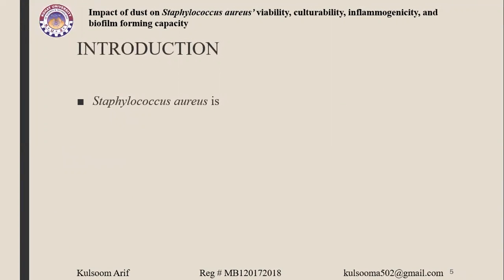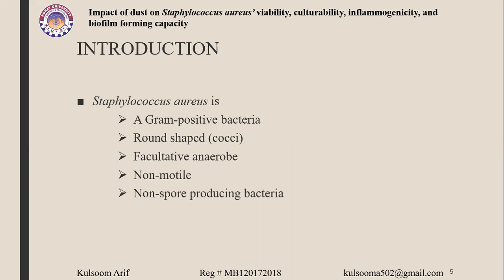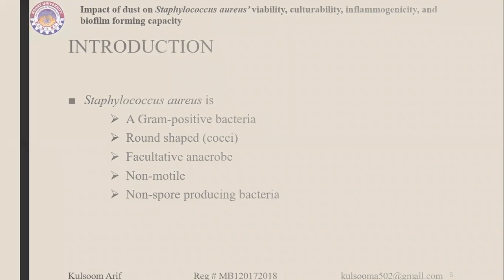Coming towards the introduction. The research paper revolves around Staphylococcus aureus. Staphylococcus aureus is a gram-positive bacteria, meaning after gram staining it retains the primary dye crystal violet and appears purple or blue under oil immersion microscopy. It is round in shape — a coccus — facultative anaerobic, non-motile due to lack of flagella, and a non-spore producing bacteria.